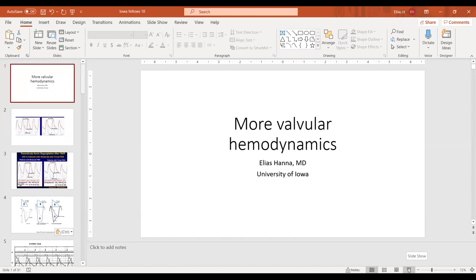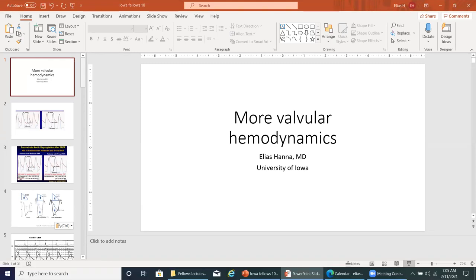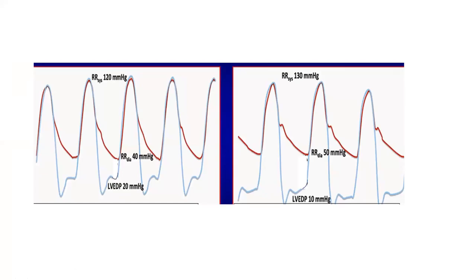This lecture covers valve hemodynamics through a variety of valvular diseases with many pressure tracings. When analyzing any tracing, always examine both systole and diastole without omitting any phase. The common simultaneous tracings in valvular diseases are LV-aorta for assessment of aortic or LVOT disease, and LA-LV pressure for assessment of mitral valve disease.